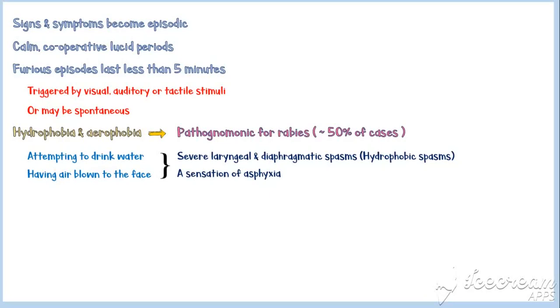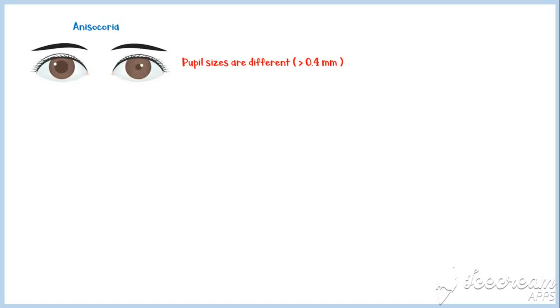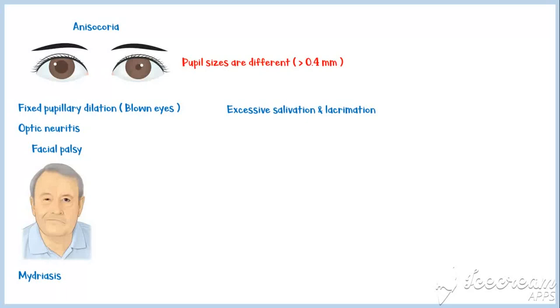Autonomic instability is also observed with furious rabies, with symptoms including fever, tachycardia, hypertension, hyperventilation, anisocoria (a condition where the sizes of pupils are different from each other, typically more than 0.4 mm), fixed pupillary dilation also known as blown eyes, optic neuritis, facial palsy, mydriasis, excessive salivation and lacrimation, and postural hypotension.